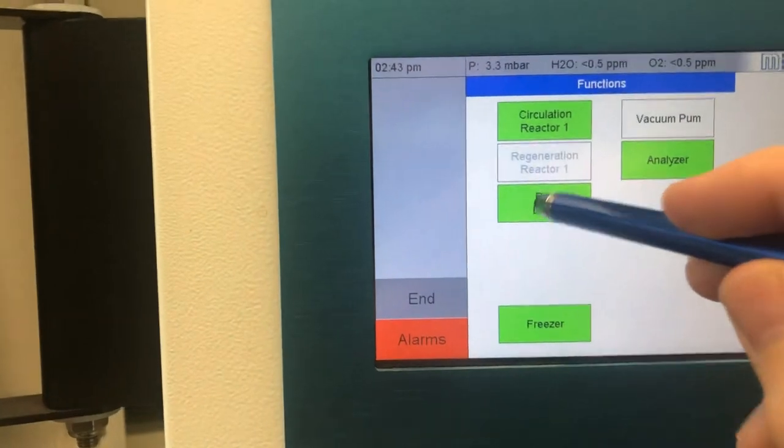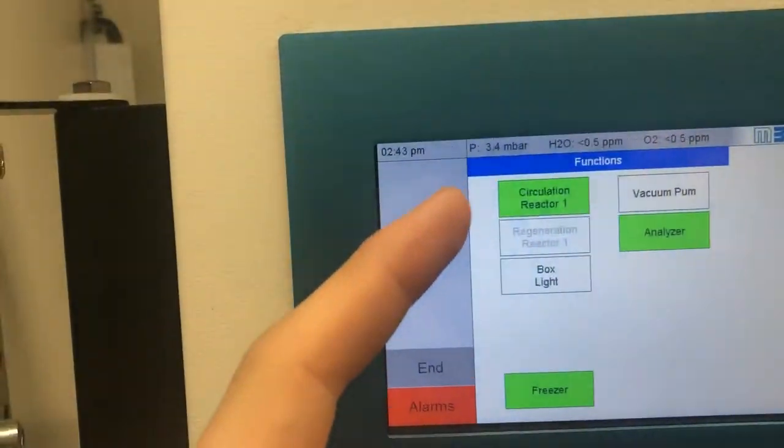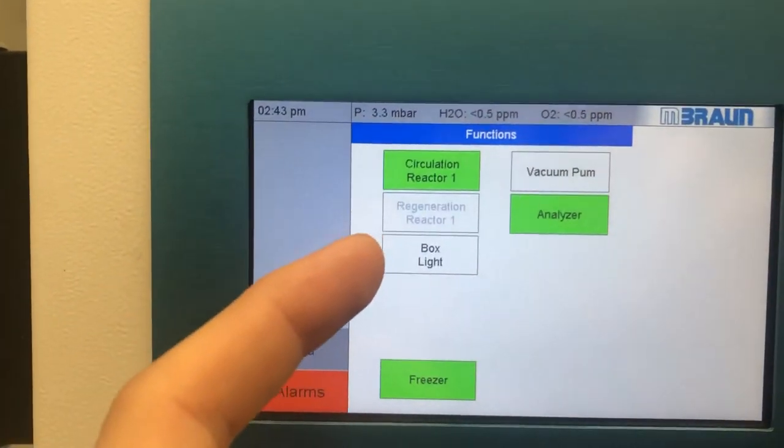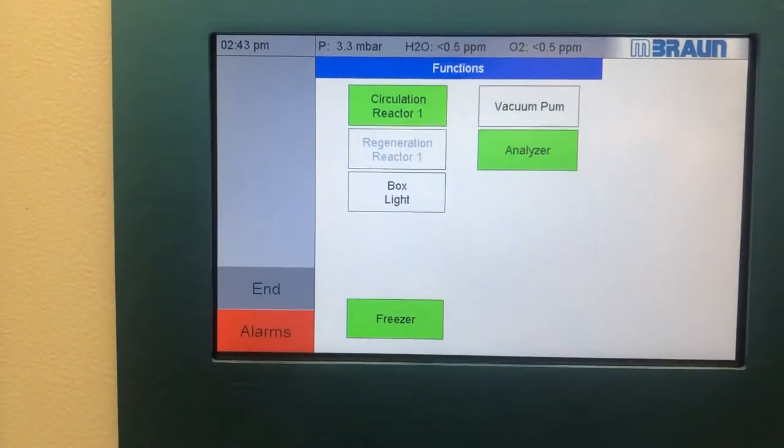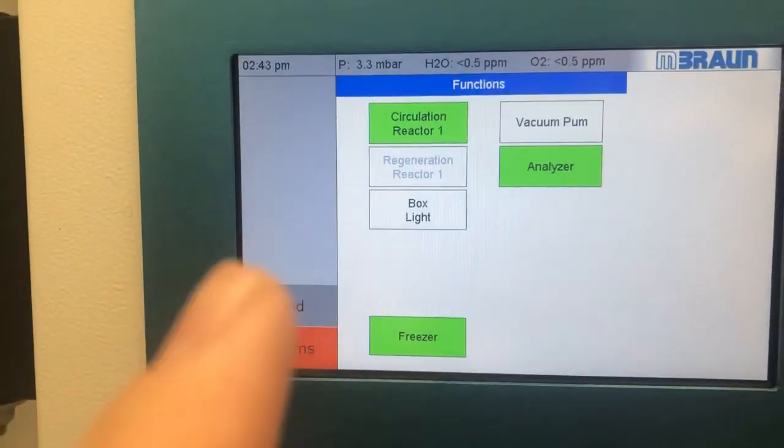We're going to turn off the box light as well. And now this is how we leave it. The circulation should always be on unless we are handling a liquid. Again, circulation is always turned on unless handling a liquid.